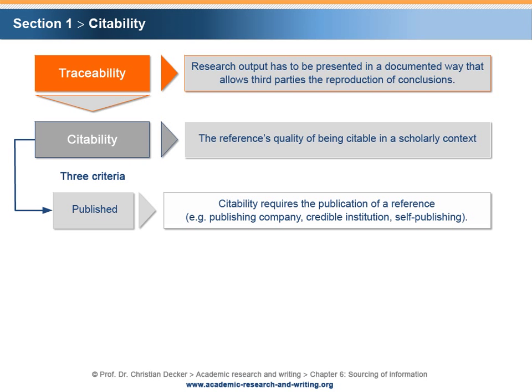Typically, publication takes place via a publishing company. In some cases, the publisher can be a credible institution, such as a university or an organization such as the United Nations, the World Bank, the European Central Bank, etc. Self-published literature is citable if its identifiability and checkability, as explicated by the following two criteria, has been verified.